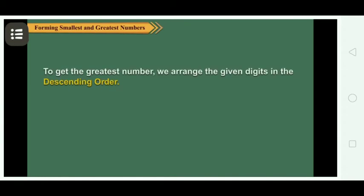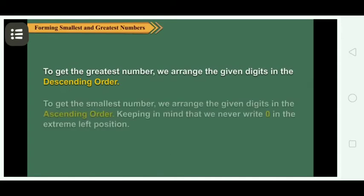To get the greatest number, we arrange the given digits in descending order. To get the smallest number, we arrange the given digits in ascending order.